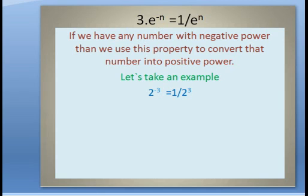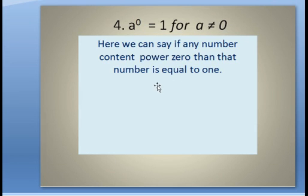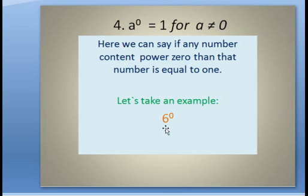Now come to the fourth property: a to the power 0 is equal to 1, where a is not equal to 0. A can be any number — 1, 2, 3, 4, 5 — any number but not equal to 0. If any number has power 0, then that number is equal to 1, but a should not be 0. For example: 6 to the power 0 is equal to 1.